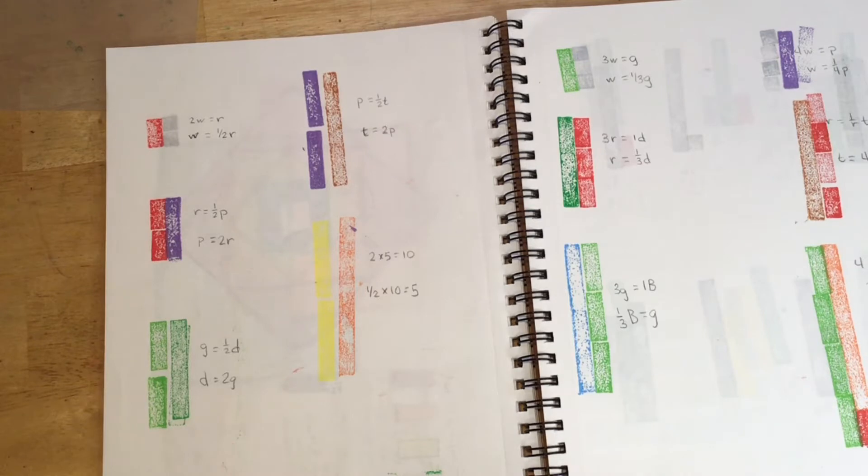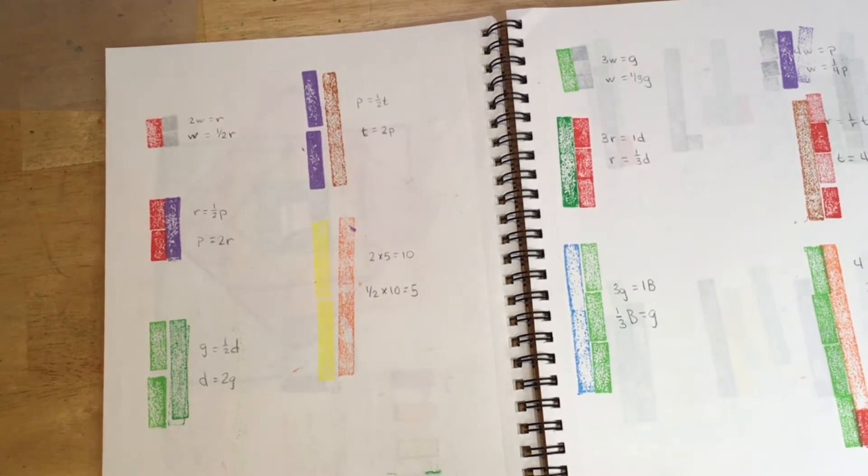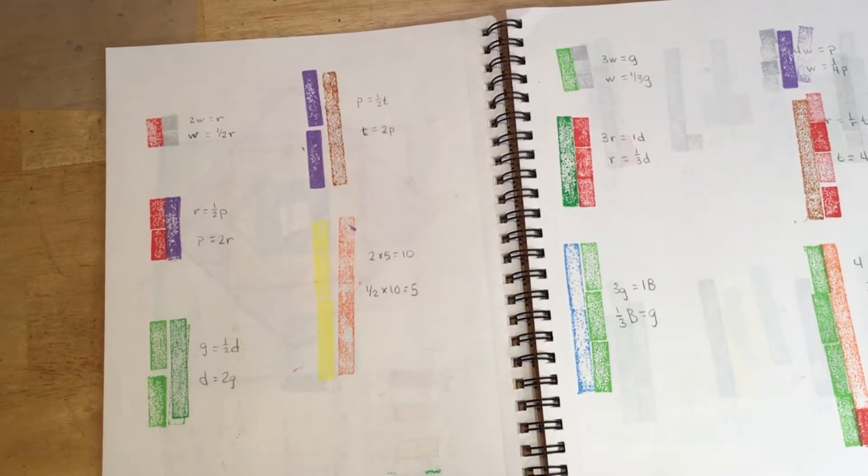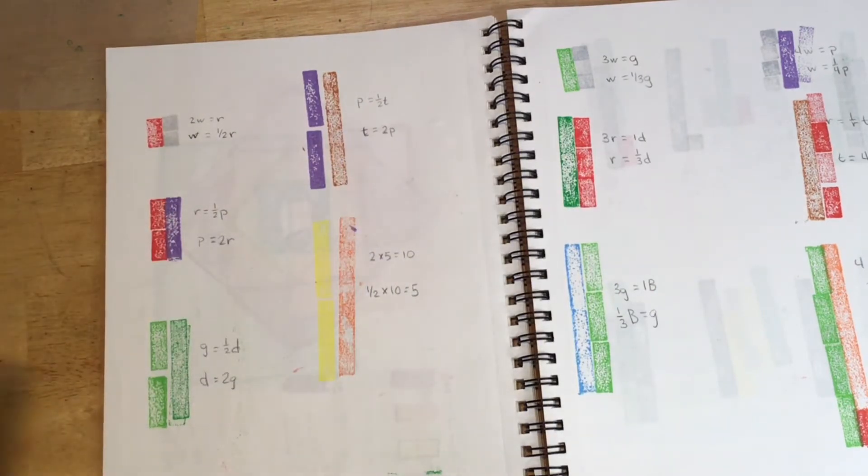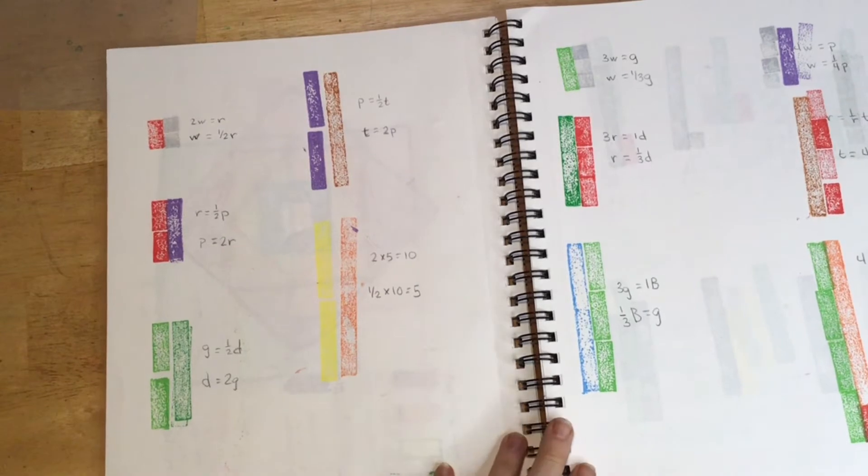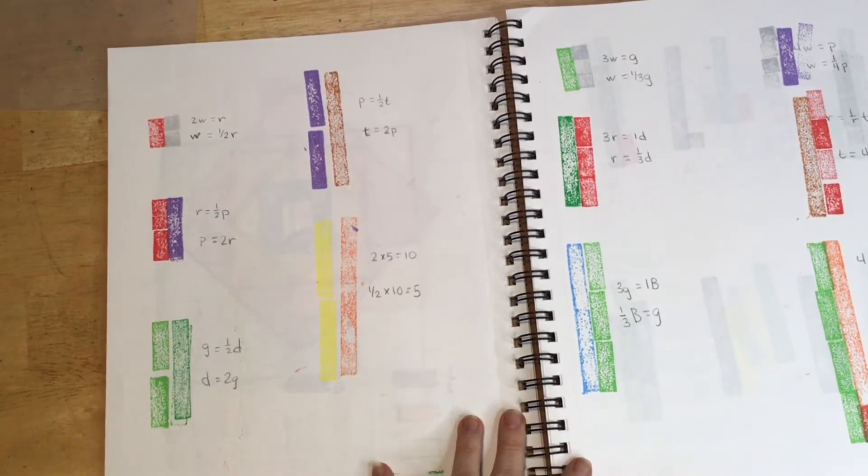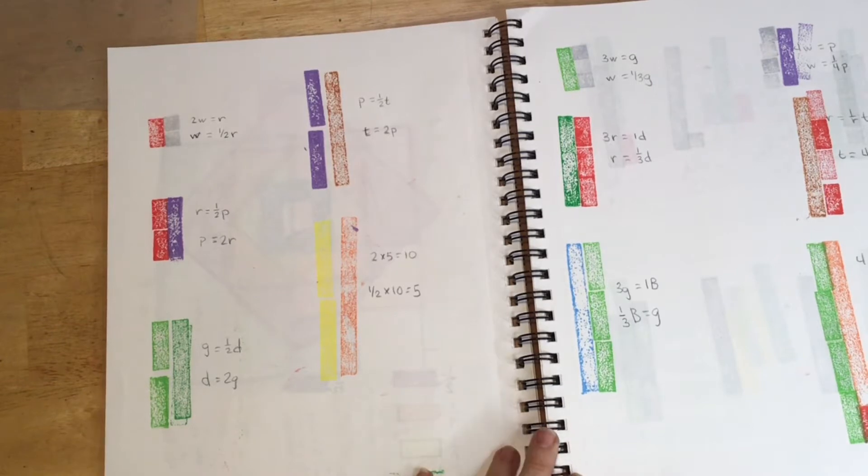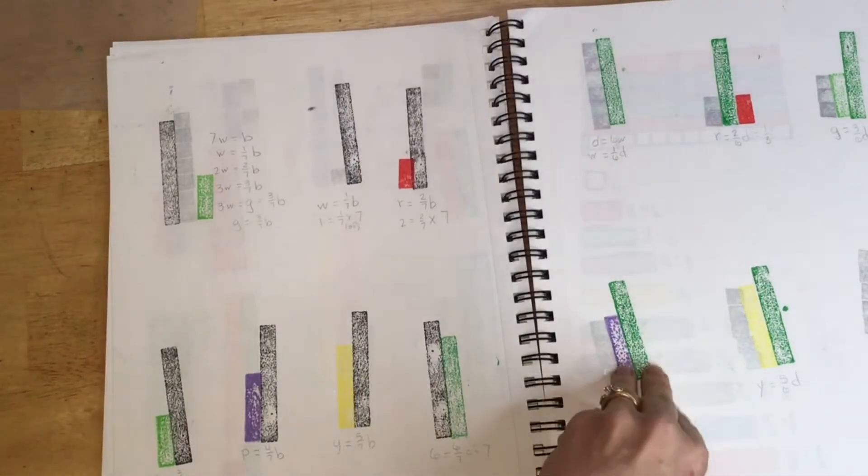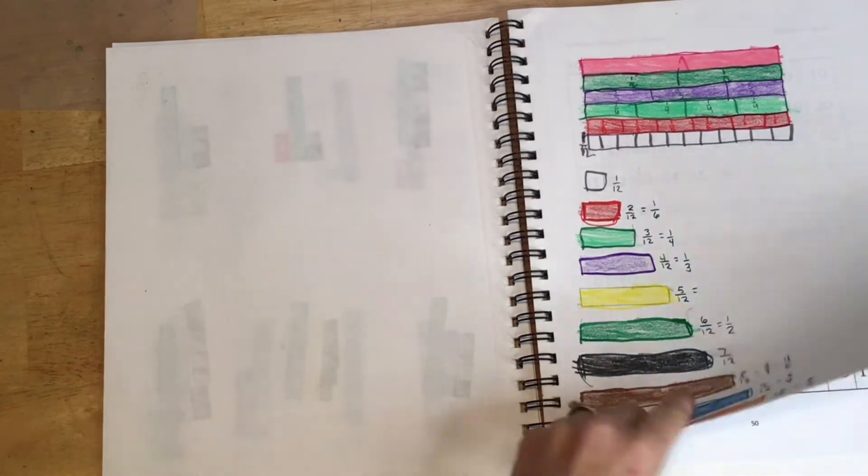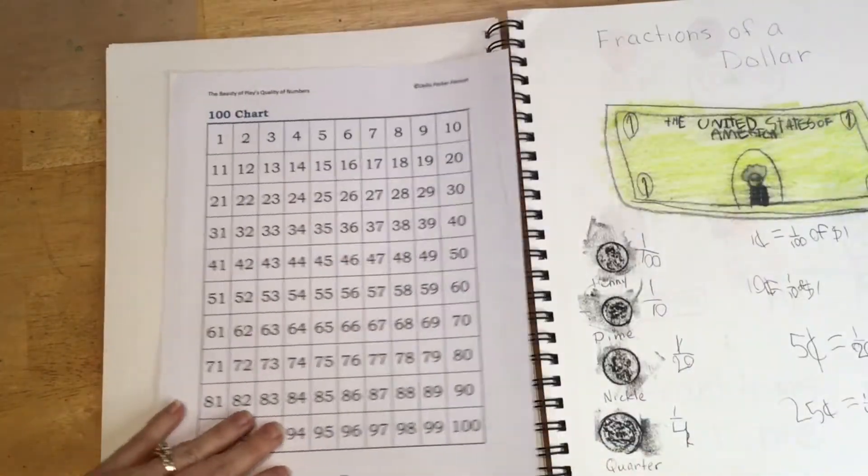So one of the things that I did was take a set of our Cuisenaire rods, our math manipulatives, just one set, one staircase, and a set of stamps. These are the stamps that we use. They are on my Amazon favorites on my website. And this made entering the work that we did with Cuisenaire rods so much easier than drawing each one of them every time. So that's another way that we use our math journal.